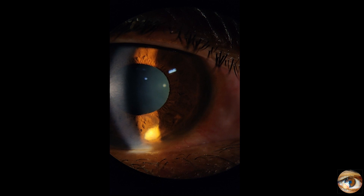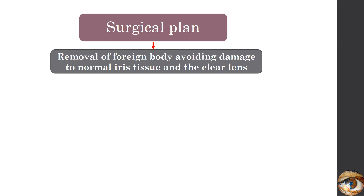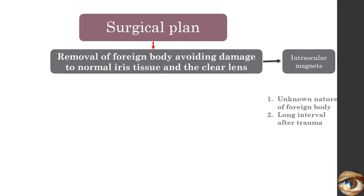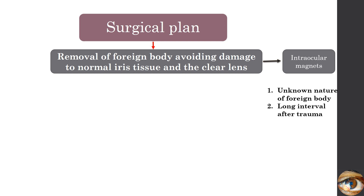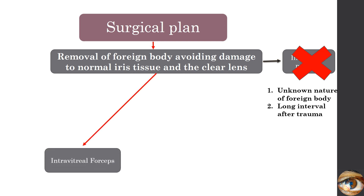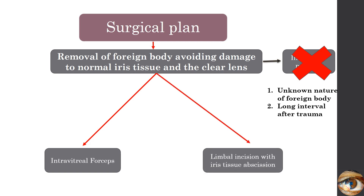Now let's look at the surgical planning. We have to remove the foreign body without damaging the normal iris tissue and the clear lens. The first approach which comes to our mind is the use of intraocular magnets, but in this case the nature of the foreign body is not known and significant duration has passed after the trauma, so this approach is not the ideal one. We can either use intravitreal forceps to remove the foreign body, or we can give a limbal incision with iris tissue abscission along with the foreign body.